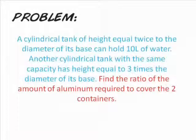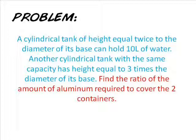For our problem, a cylindrical tank of height equal twice the diameter of its base can hold 10 liters of water. Another cylindrical tank with the same capacity has the height equal to three times the diameter of its base. Find the ratio of the amount of aluminum required to cover the two containers.